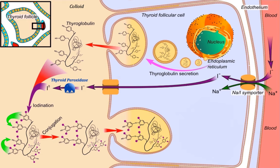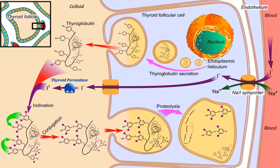Back inside the cell, proteolytic enzymes digest thyroglobulin, liberating three thyroid molecules: thyroxine, known as T4, and triiodothyronine, known as T3, which are then released into the circulation, where they quickly bind to carrier proteins for transport to target cells.